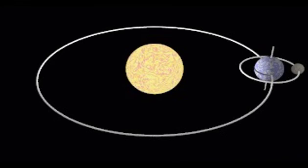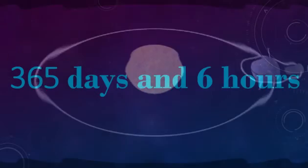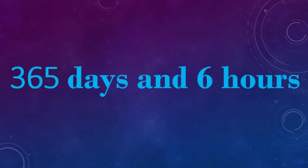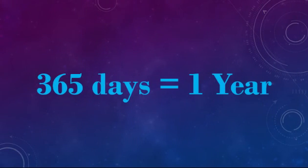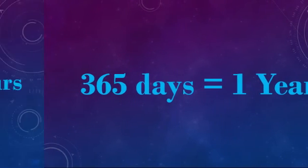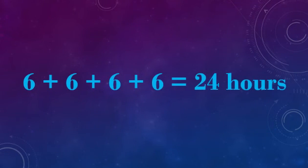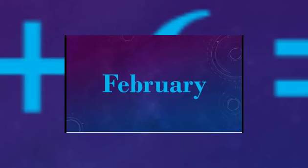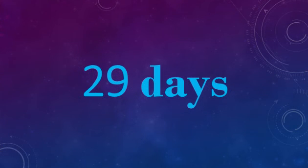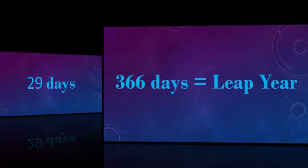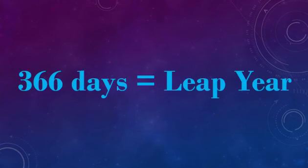One revolution of the earth around the Sun takes 365 days and six hours. 365 days are equivalent to one year while the six hours in four consecutive years adds up to form one full day of 24 hours, which is added to the month of February every fourth year. In this year, the month of February has 29 days instead of 28 days. This year with 366 days is known as leap year.